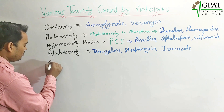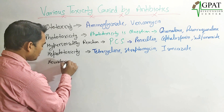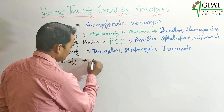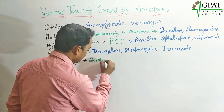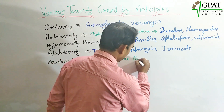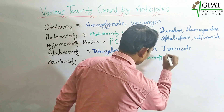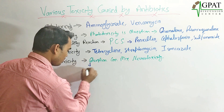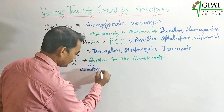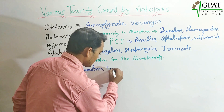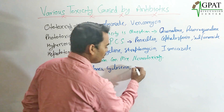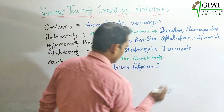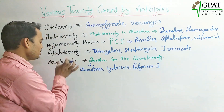The next toxicity is neurotoxicity. The trick to remember neurotoxicity is 'Q-C-M': Q for quinolones, C for cycloserine, and M for polymyxin B. So quinolones, cycloserine, and polymyxin B are the antibiotics which cause neurotoxicity.